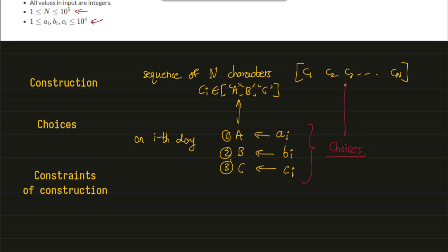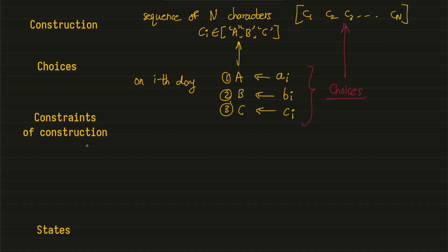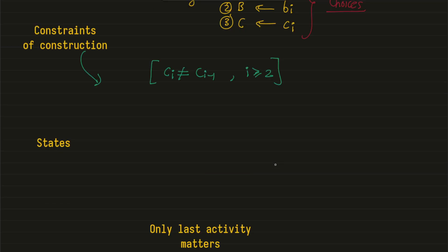While we construct this sequence, the constraint of the construction as mentioned in the problem is that no two consecutive activities are the same. On consecutive days we cannot perform the same activity. Formally, ci must not equal c_(i-1) for i greater than or equal to 2. This is the constraint we need to follow over the entire construction.